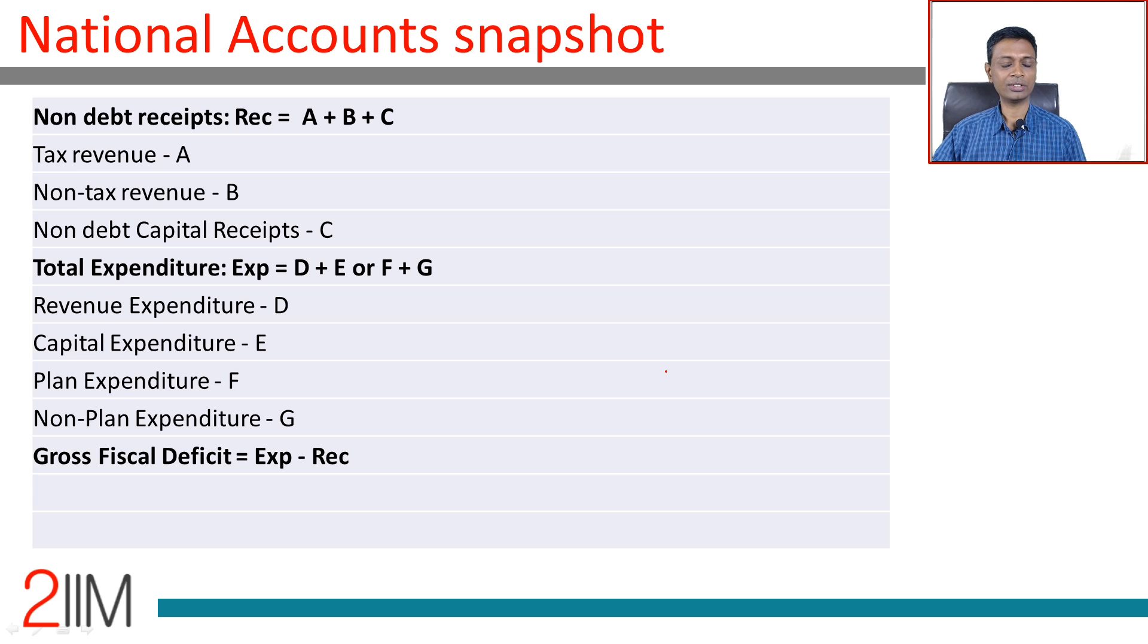What is the whole snapshot going to be? The government gets what is called tax revenue, non-tax revenue, non-debt capital receipts - all three put together is called non-debt receipts.